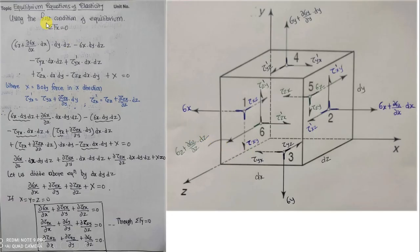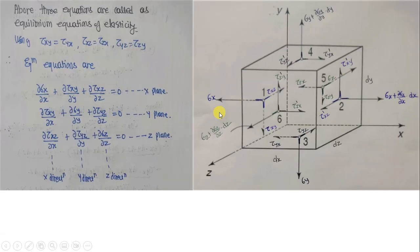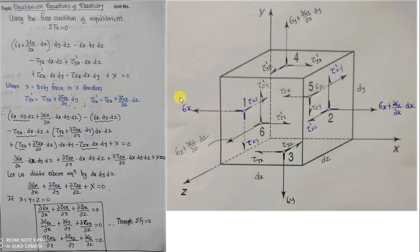Now let us derive the equilibrium equations. We will consider the same figure. As we know, there are three equilibrium conditions used in engineering mechanics: summation Fx equals zero, summation Fy equals zero, and summation M equals zero. Here we will use the first equilibrium condition: summation Fx equals zero. Remember this is a three-dimensional figure — summation Fx equals zero means the sum of forces acting in the x direction is equal to zero.